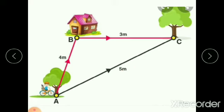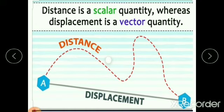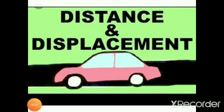So now you understand what distance and displacement are. Distance is the actual path covered by the body, and displacement is the shortest distance from the initial to the final position. Distance is a scalar quantity whereas displacement is a vector quantity. The SI unit of both distance and displacement is meter.